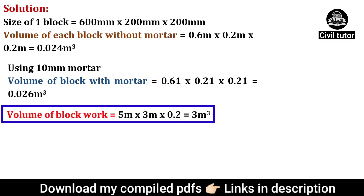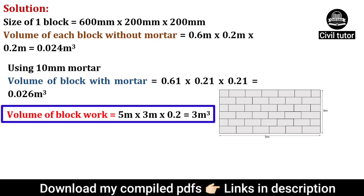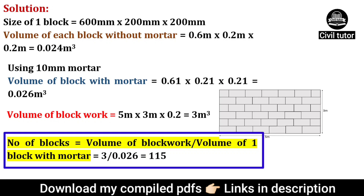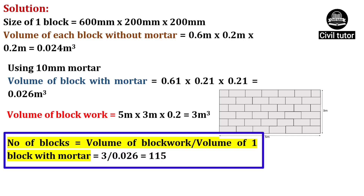Total volume of the block work will be equal to volume of the wall, which is equal to 5 m × 3 m × 0.2 m, which will be equal to 3 cubic meters. So the number of blocks will be equal to volume of block work divided by volume of one block with mortar. Volume of block work is 3 cubic meters and volume of one block with mortar is 0.026 cubic meters, so the number of blocks will be equal to 115.